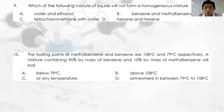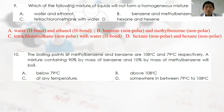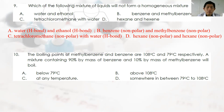Question 9: Which liquid mixture will NOT form a homogeneous mixture? Water and ethanol form hydrogen bonds — homogeneous. Benzene and methylbenzene are both non-polar — homogeneous. Tetrachloromethane is non-polar while water is polar — they will NOT form a homogeneous mixture. Hexane and heptane are both non-polar — homogeneous. Answer: C.